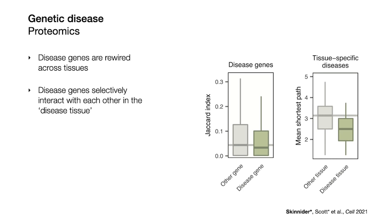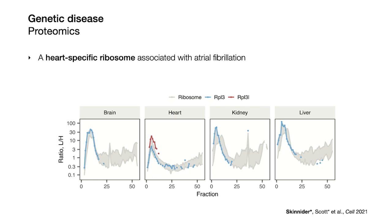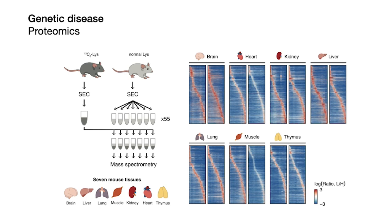When we looked at genes associated with the same tissue-specific genetic disease — for example, congenital heart disease — we found that those genes did tend to physically interact with one another, but only in the specific tissue where mutations cause symptoms. This is really the first experimental support for the idea that tissue-specific genetic diseases involve rewiring of tissue-specific protein interactions. To highlight just one example, we discovered a heart-specific form of the ribosome formed by incorporation of the protein RPL3L, a protein that exome sequencing studies had associated with atrial fibrillation, which is a disease of the heart.